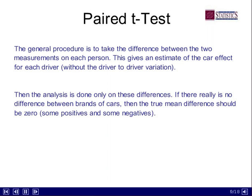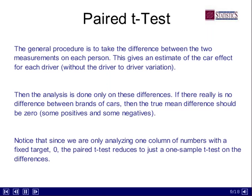By taking that difference, we're removing that driver-to-driver variation out of the analysis and focusing on that column of differences, which allows us to just look at the cars. If there's really no difference — nothing going on at all with the cars — then the average of that column of 20 differences should be near zero. There should be some positives, meaning sometimes A was better, and some negatives, sometimes B was better — they sort of cancel out. So the null hypothesis is basically looking at this versus zero. After we subtract, we only have one column of numbers — the differences — so if I'm looking at that relative to a fixed target of zero, this is very similar to a one-sample t-test, and in fact reduces exactly to a one-sample t-test.